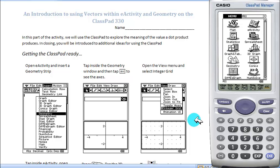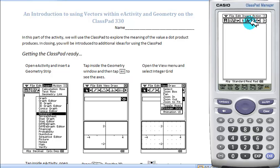Welcome to our activity where we introduce vectors in eActivity and using a geometry strip. We start by going to eActivity, which can be found on our menu application here. We want to insert a geometry strip.